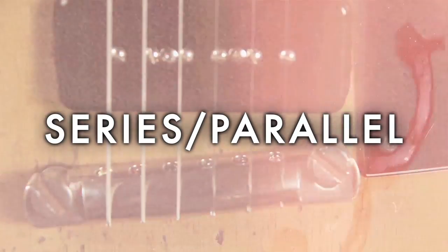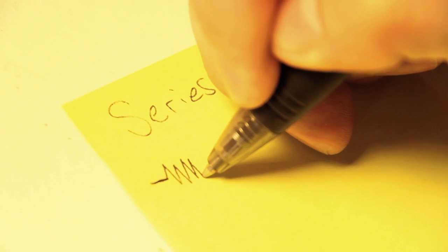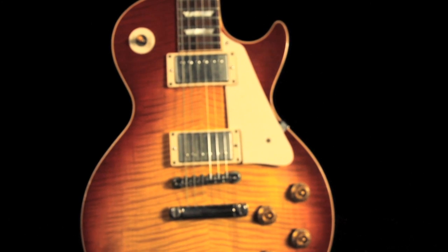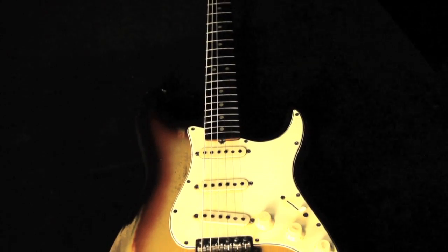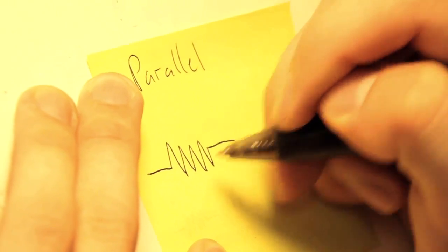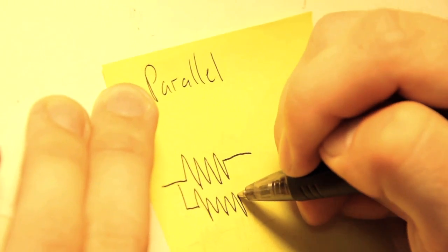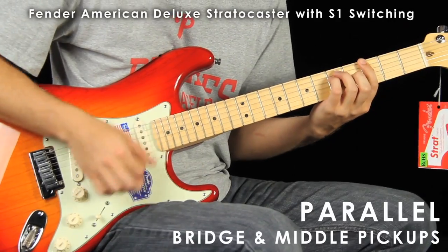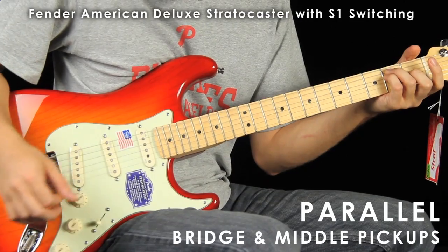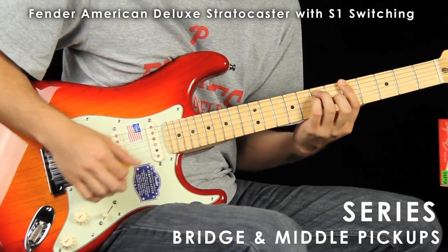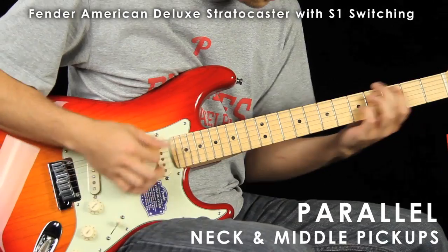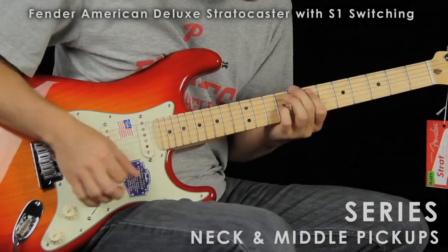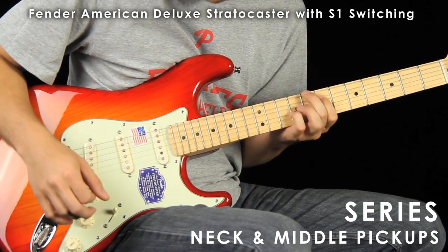The next part of the equation is series and parallel. Series is how a humbucker is made, with one coil wound and then the other one wound directly after that. When it's being played, you hear one coil on top of the other making two coils. You can also wire your humbucker in parallel. Parallel is what you see in a Stratocaster. In your two and four positions, those pickups are running side-by-side, as opposed to one after the other.